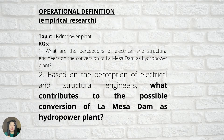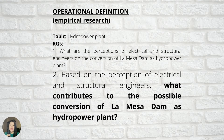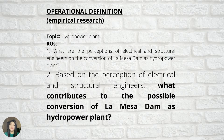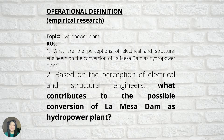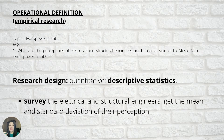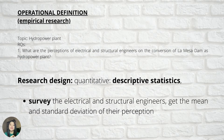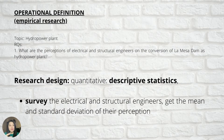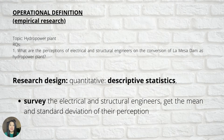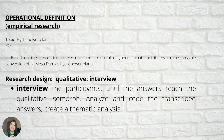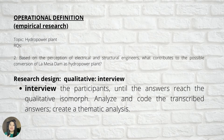Once you have finalized your research question, you can add more research questions. For example, 'Based on the perception of electrical and structural engineers, what contributes to the possible conversion of Lamacidum as a hydropower plant?' Once you have finalized your research questions, you can now choose a research design. To answer our first research question, we have to choose quantitative, specifically descriptive statistics — you can survey electrical and structural engineers and get the mean and standard deviation of their perception. Then to answer research question number two, you can use qualitative research design, specifically interview.